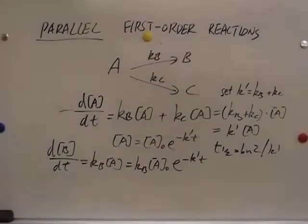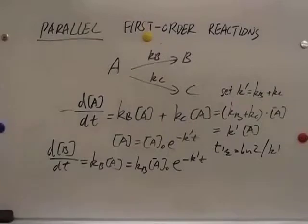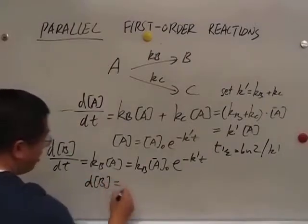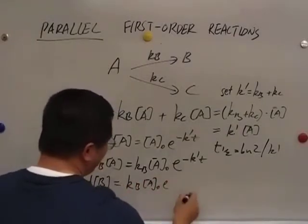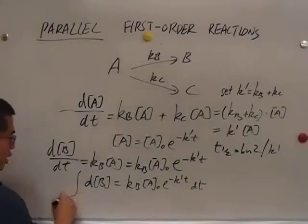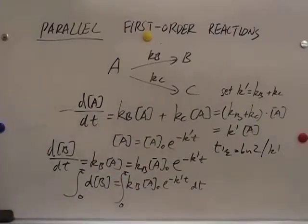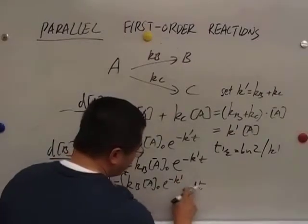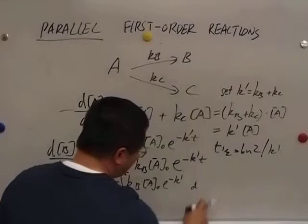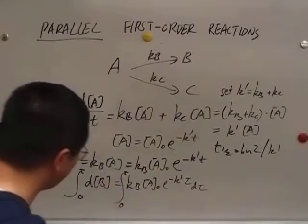And then we are looking at only two variables. One is B, the other is time t. And then we just simply separate the two variables. So we have dB equals KB A naught, e to the power of negative K prime t, dt. We integrate both sides from time zero to time t. And again, this t here is a dummy variable. I'm going to just change this t to tau.